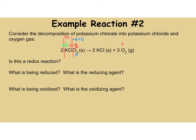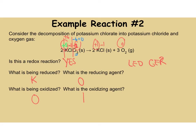In the product KCl, if chlorine is minus 1, potassium is plus 1. Potassium changed its charge and oxygen changed its charge, so this is a redox reaction. What gained electrons and was reduced? Potassium went from plus 5 to plus 1 — it got more negative, so potassium was reduced. Oxygen was being oxidized — it lost electrons — and potassium was the oxidizing agent that caused it.